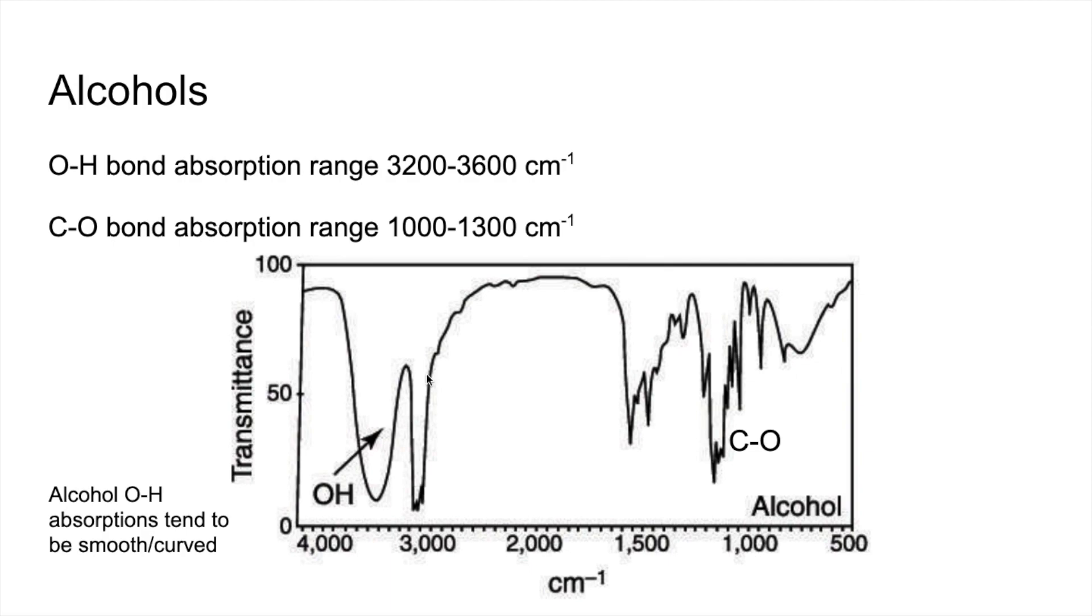You'll notice we've also got this absorption here. Now you always get something going on at around about the 3000 mark, but notice this is quite narrow, it's quite spiky. These are due to CH absorptions and you always get them because all organic compounds are going to contain this bond.